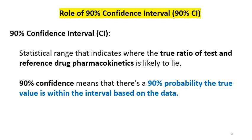Now coming to the terminology of 90% confidence interval or 90% CI. What is 90% CI? Confidence interval is a statistical range that indicates where the true ratio value of test and reference drug pharmacokinetics is likely to lie. Simply, 90% CI means there is a 90% probability the true value is within the interval based on the data, and it is a bioequivalence criteria.